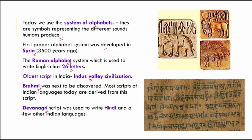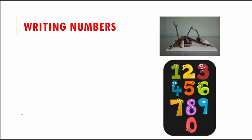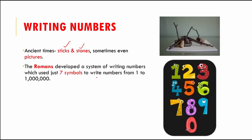Now, what about writing numbers? In ancient times, early humans used sticks and stones — sometimes even pictures — to record the number of animals they killed or people in their village. This was not a very efficient way of counting. Later, the Romans developed a system of writing numbers using about seven symbols to write any number from one to one crore.